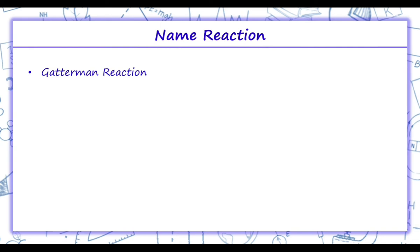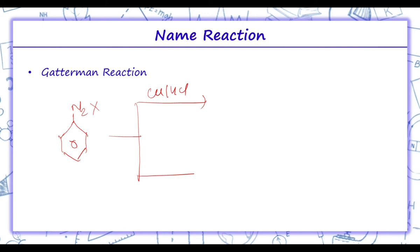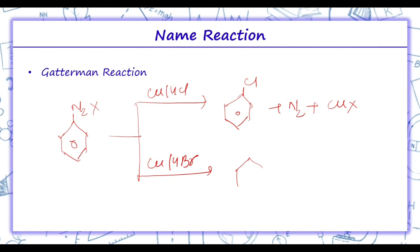In Gattermann reaction, chlorine or bromine are introduced in the benzene ring by treating benzene diazonium salt with corresponding halogen acid. We have benzene diazonium salt N2X treated with corresponding halogen acid HCl or HBr. If HCl is taken, we get chlorobenzene plus N2 plus CuX. And if HBr is taken, we get bromobenzene plus N2 plus CuX.